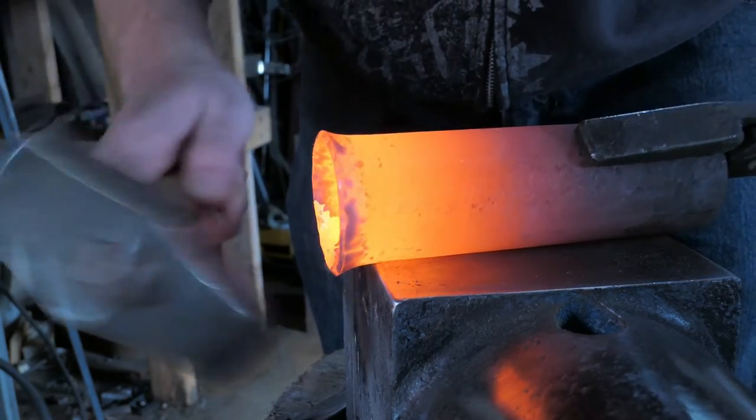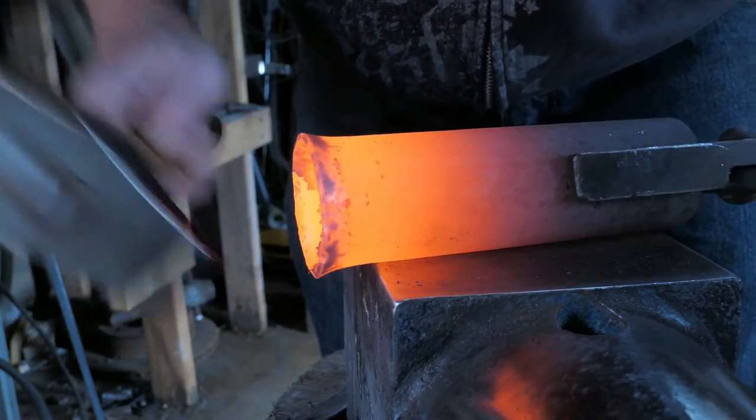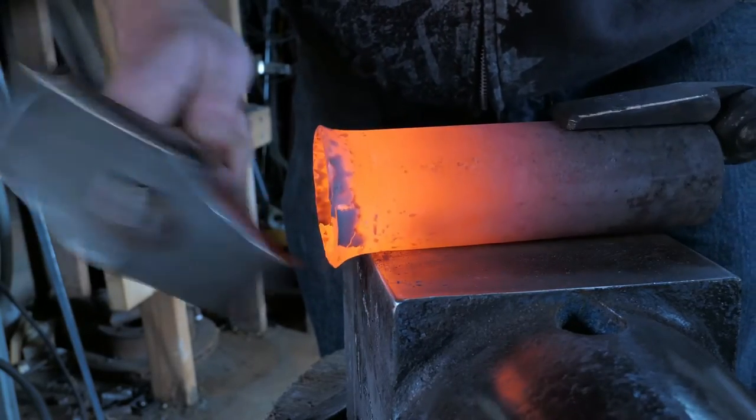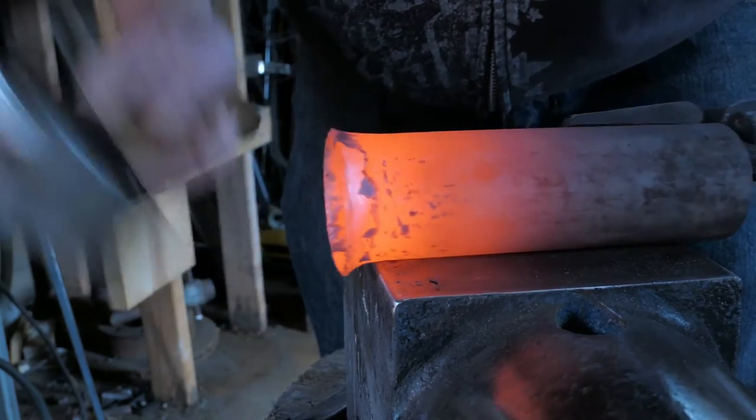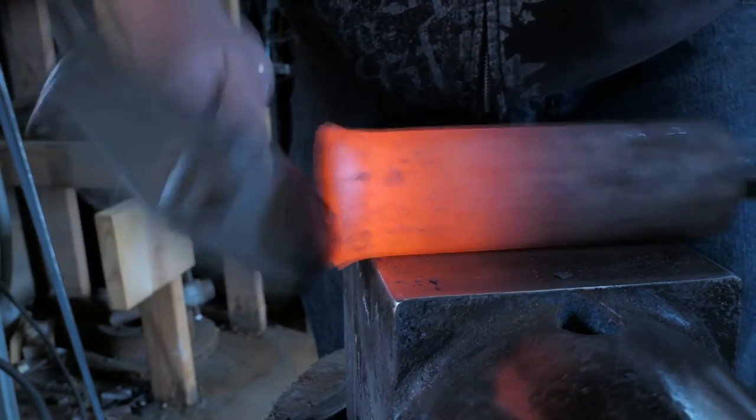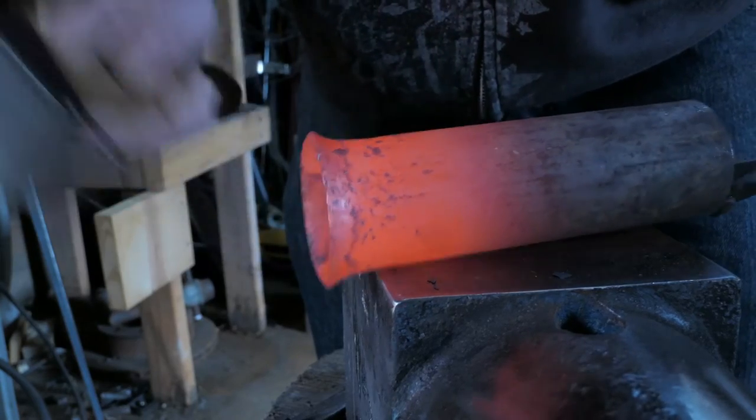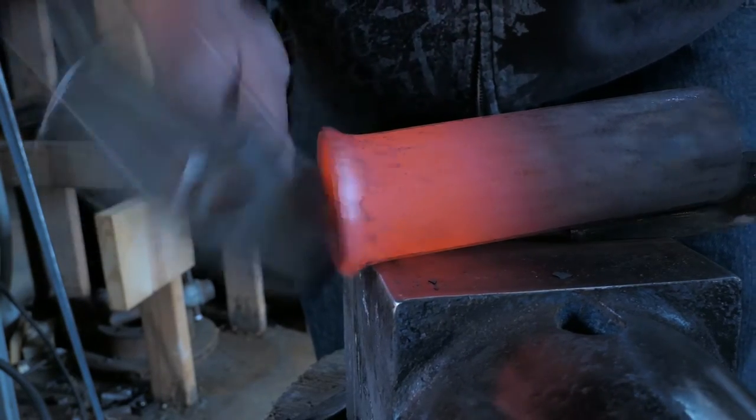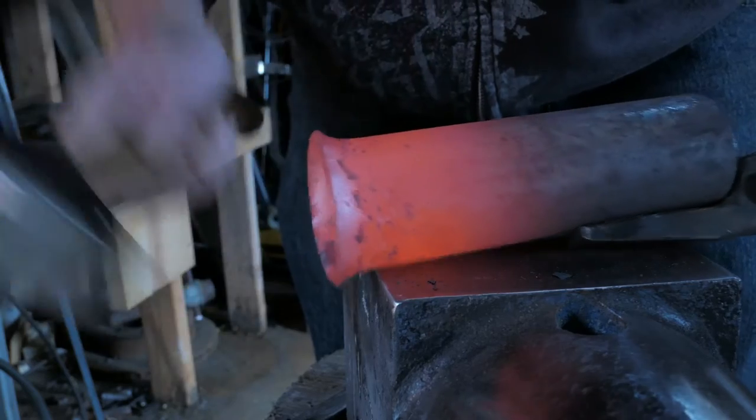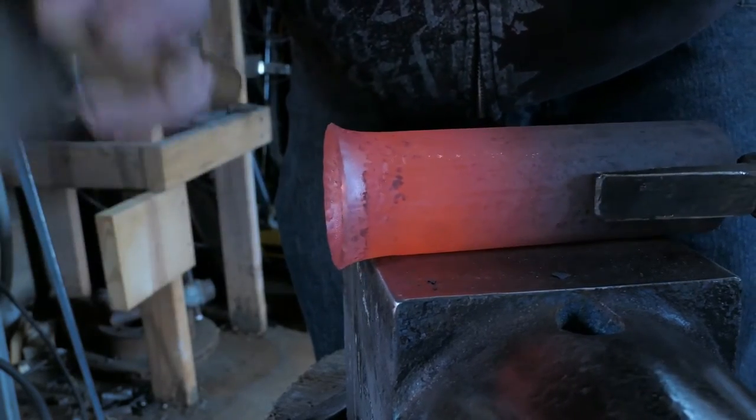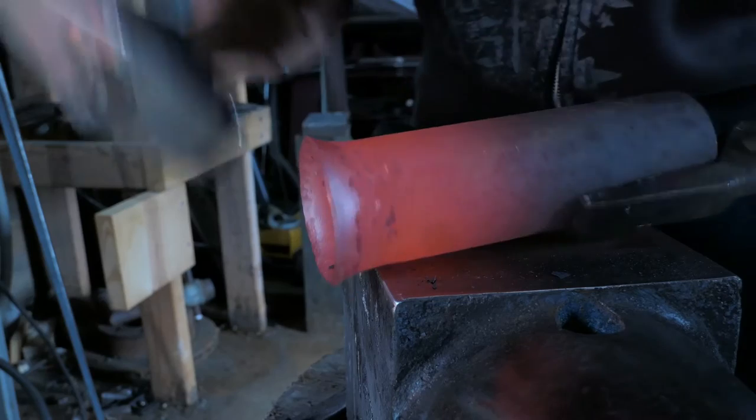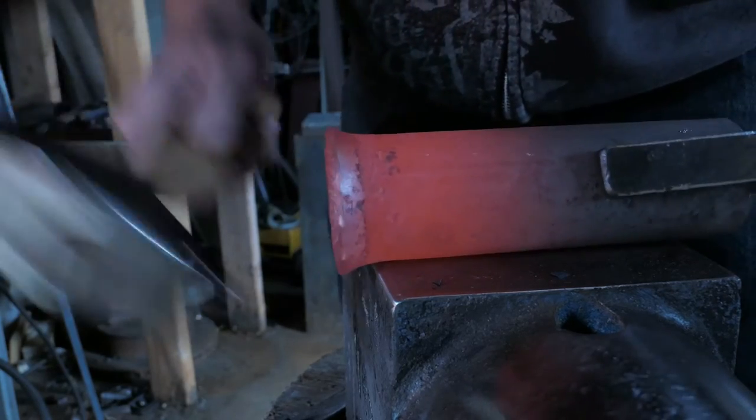So as I'm working around this edge and starting to flare out the end of the pipe, I'm trying to be careful not to actually strike on the corner of the anvil so that I don't pinch the steel and actually make it thinner. I'm trying to keep my strikes at about a 45 degree angle and I'm just going to continue working around this rim until it starts to flare out pretty evenly.